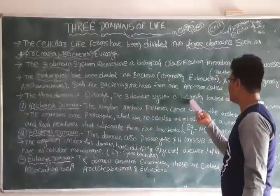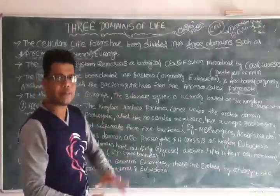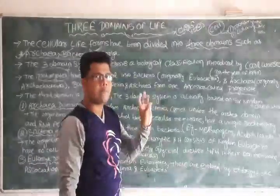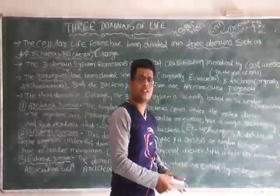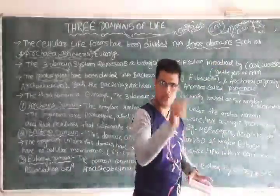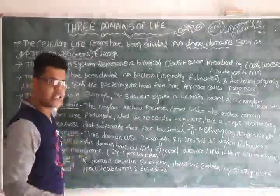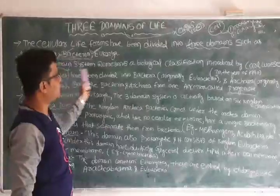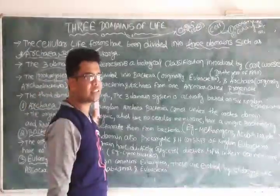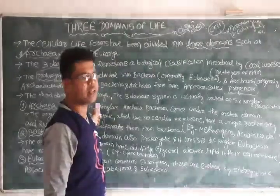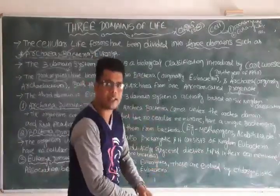The three domain system is actually based on the six kingdom system. So we have three domains: Archaea, Bacteria, and Eukarya, and we need to know that cells are of two types — prokaryotic and eukaryotic. The main difference is that prokaryotes lack a nucleus, while eukaryotic cells have a nucleus. These three domains are mainly based on six kingdoms.